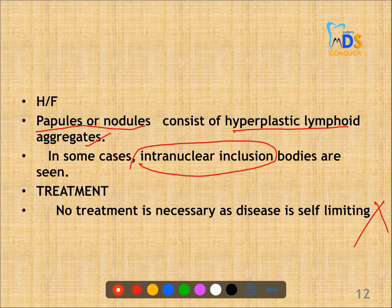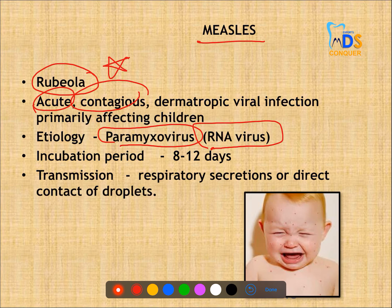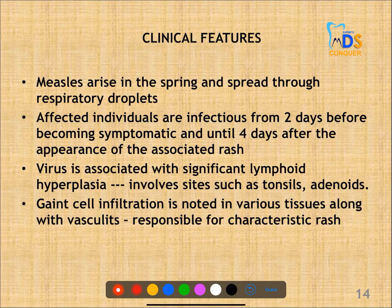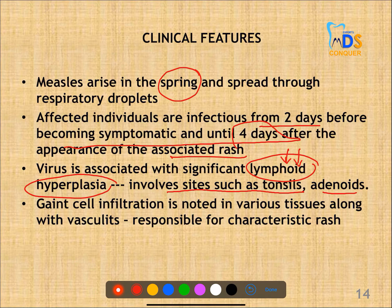Coming to the next infection, measles, it is also called rubeola — you should not confuse this with German measles or rubella. This is an acute and contagious infection. Etiology is with a paramyxovirus, which is an RNA virus. Incubation is 8 to 12 days. Transmission is mostly through respiratory secretions or direct contact with droplets. Cases mostly arise during spring seasons. Individuals are infectious from 2 days before becoming symptomatic until 4 days after. This virus is mostly associated with lymphoid hyperplasia, so involved sites are tonsils and adenoids.